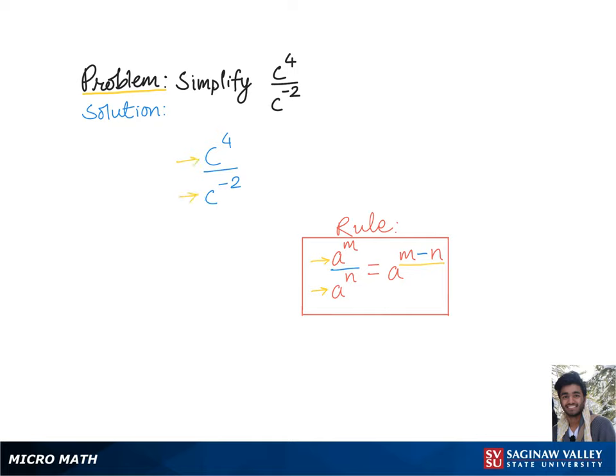In our problem, we have two exponents with common base c in the form of a quotient. So to simplify, we will keep the common base c and raise it to the numerator power of 4 minus the denominator power of negative 2.